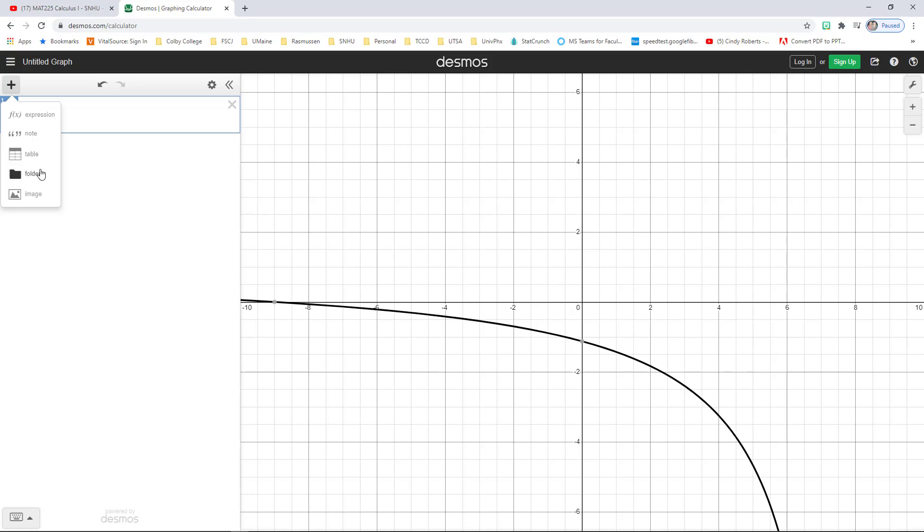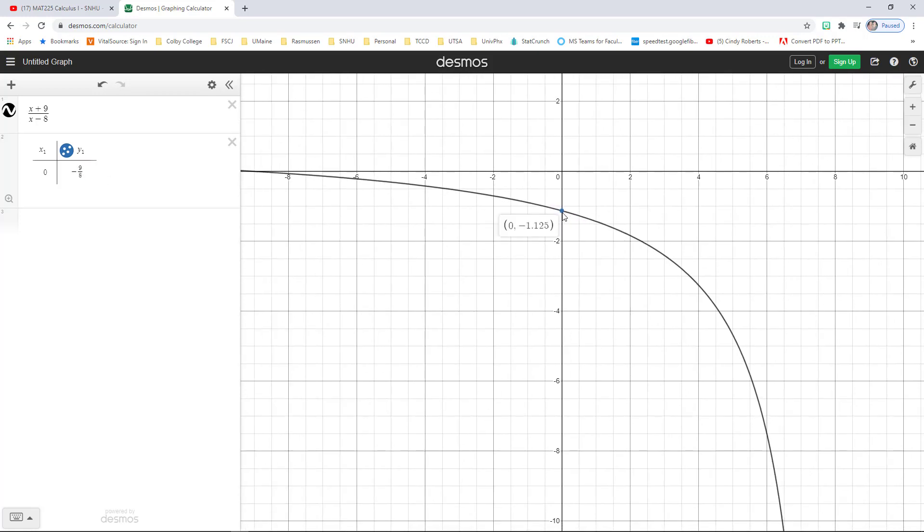And now put the point. What's the point? 0 and negative 9/8 to make sure that it's actually on the graph. That would be really bad if it wasn't there.